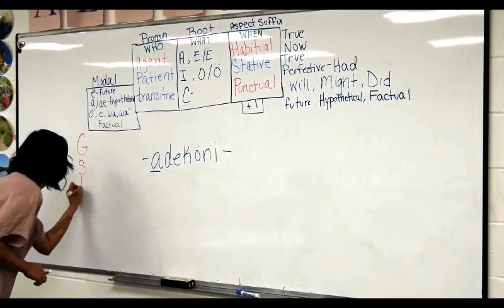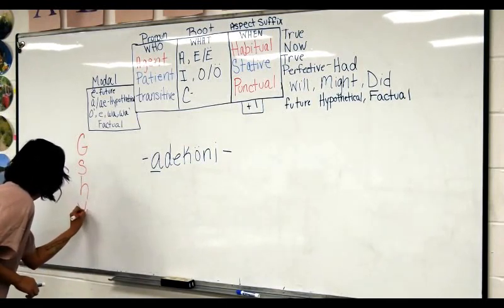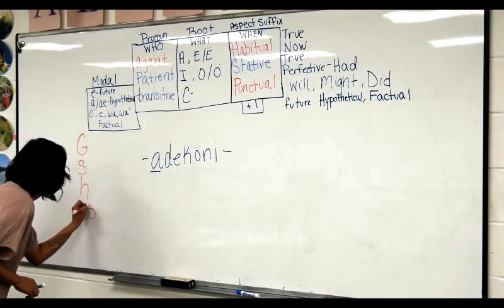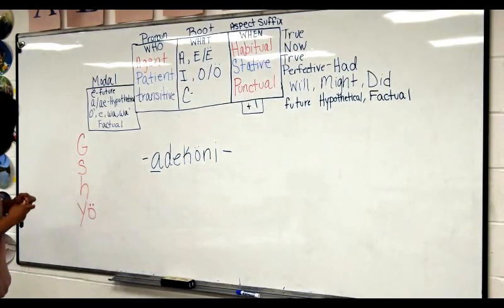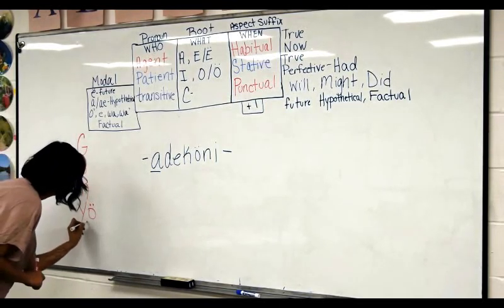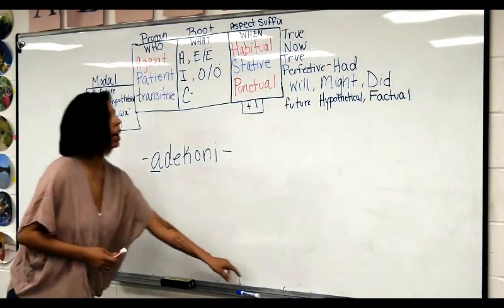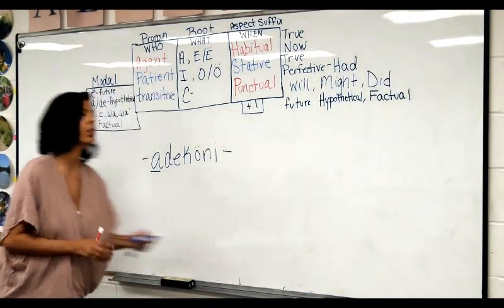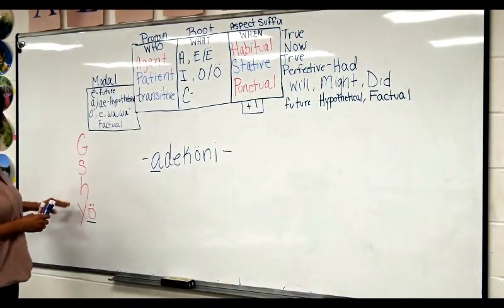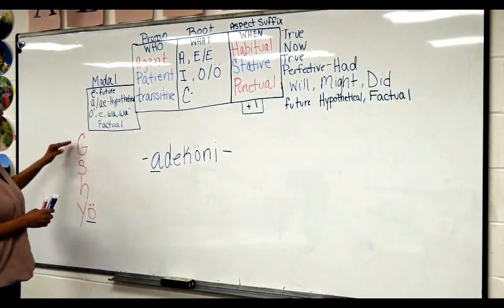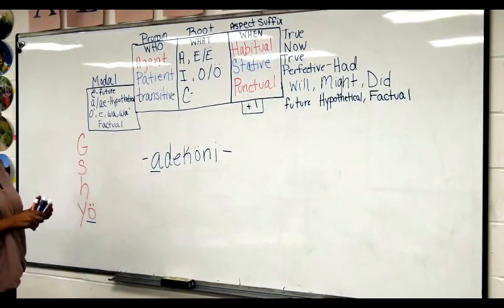My A-stem pronouns for agents are going to be g, as, h, and then y-nasal-o. I'm just going to do Gyatdi, Shatdi, Hyatdi, Yayatdi — me, you, him, and her — just as an example.